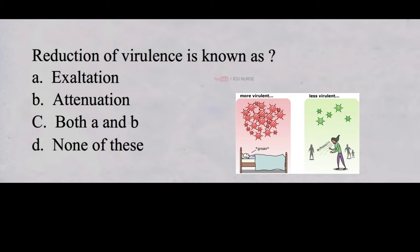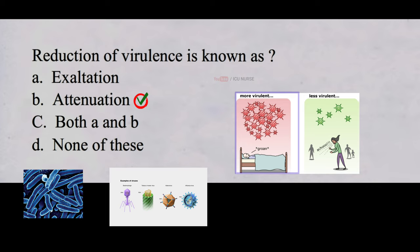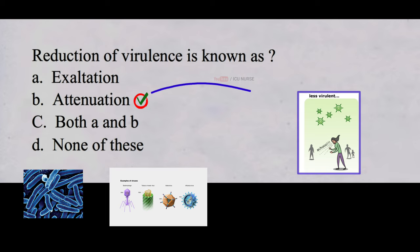Reduction of virulence is known as A. Exaltation, B. Attenuation, C. Both A and B, D. None of these. And the correct answer is B, Attenuation. Virulence refers to the ability of an organism such as a bacterium or virus to cause disease. A highly virulent pathogen is more likely to cause severe illness or death, while a less virulent one may cause milder symptoms. Attenuation is the process of reducing the virulence or pathogenicity of an organism. This is often done intentionally for the development of vaccines.